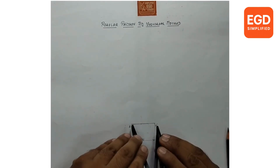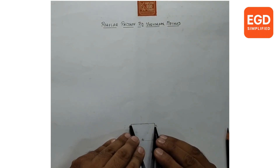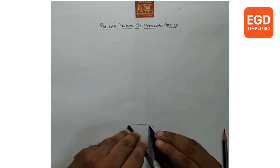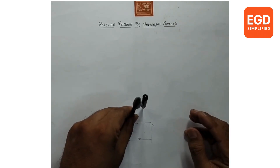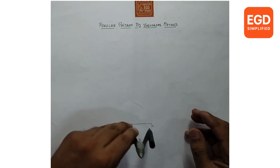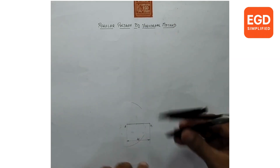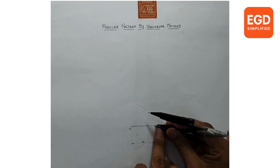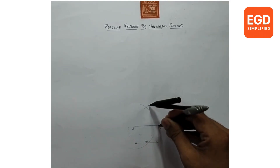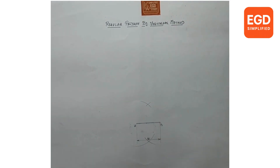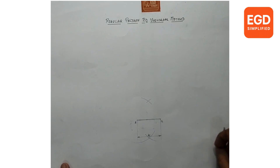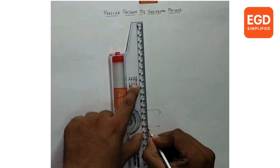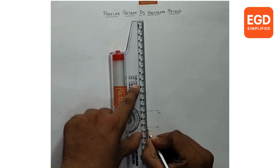Now draw the bisector of AB. Take more than half of AB and draw arcs on both sides from point A as well as from point B. Then draw a line from the intersection of the arcs.